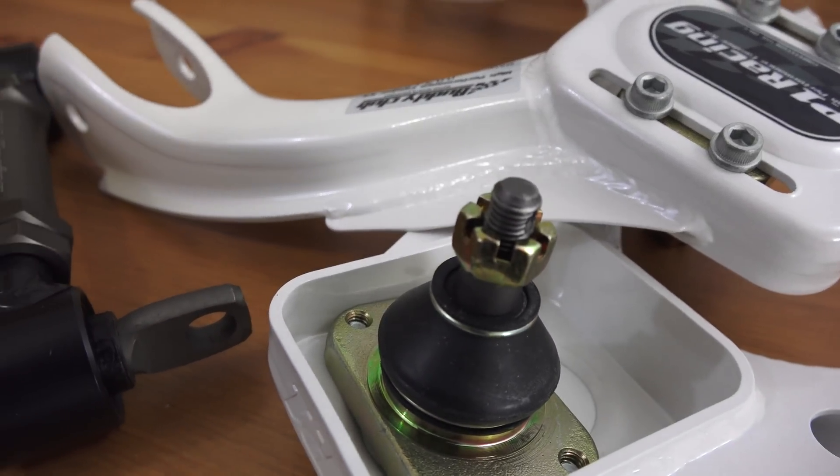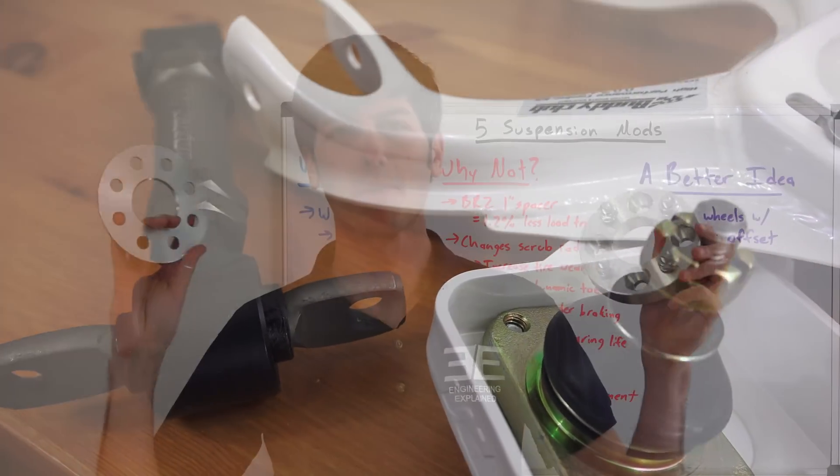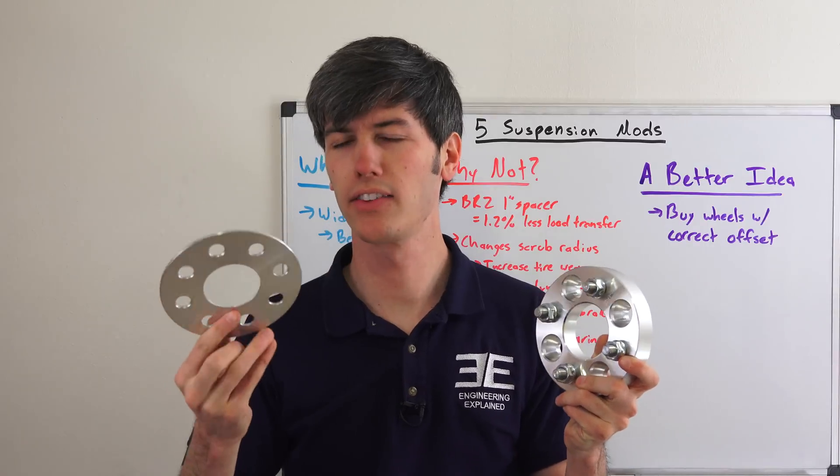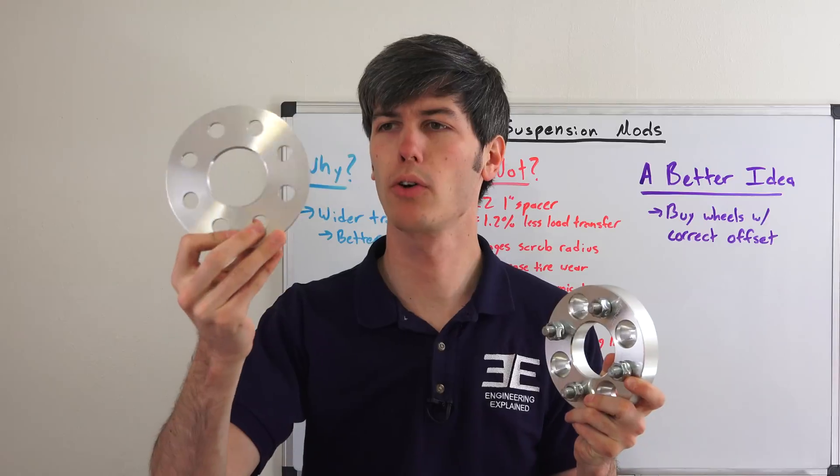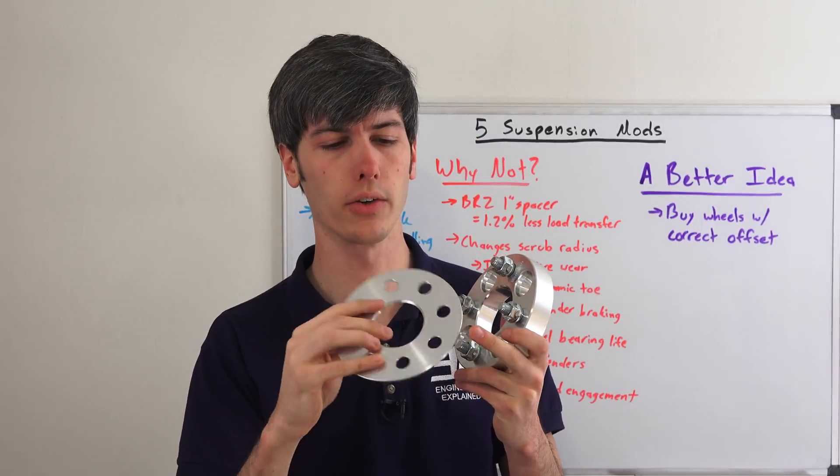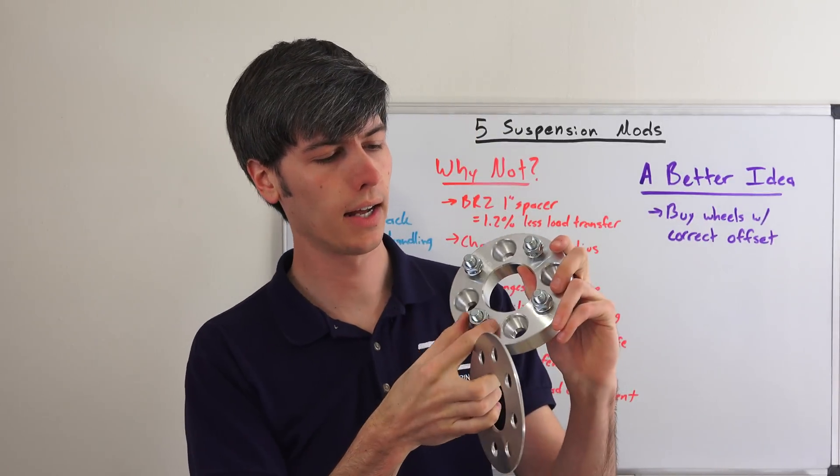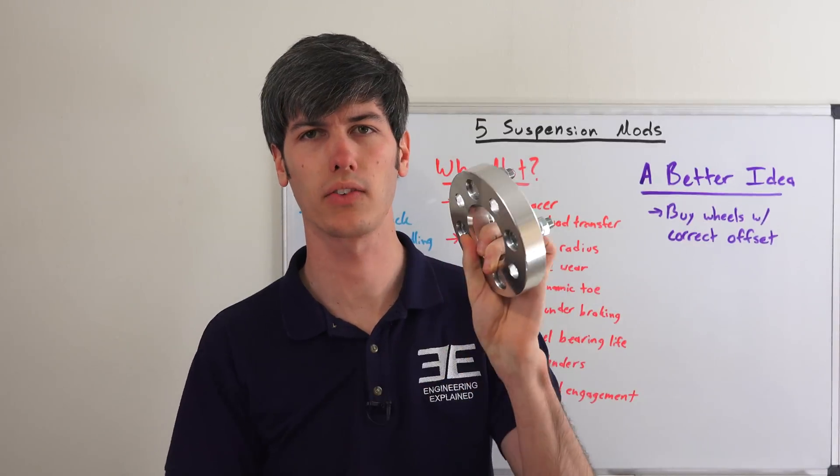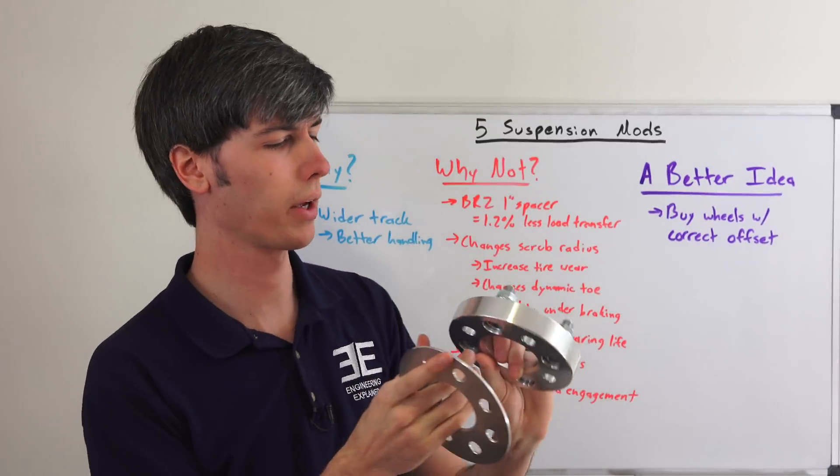Number four, we have wheel spacers, and there's different kinds out there. There's some like this where you don't actually have new threads on it—you just place the threads over it and you're pressing out the wheel a bit. Then these here which have their own threads because it's thicker—this is a 1 inch wheel spacer.